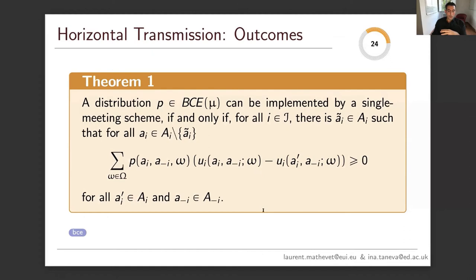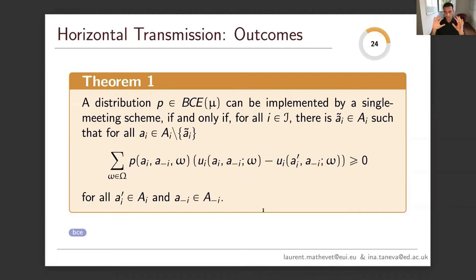Sufficiency is proved by identifying canonical information structures — not direct, but augmented direct information structures — where the messages people receive include an action as well as the action profiles of their opponents. This is the sense in which they are participating in a meeting: when in a meeting, you know the messages and thus, under pure strategies, the actions of the other players. Let's see what this characterization gives us in a simple example: the battle of the sexes, a complete information game.